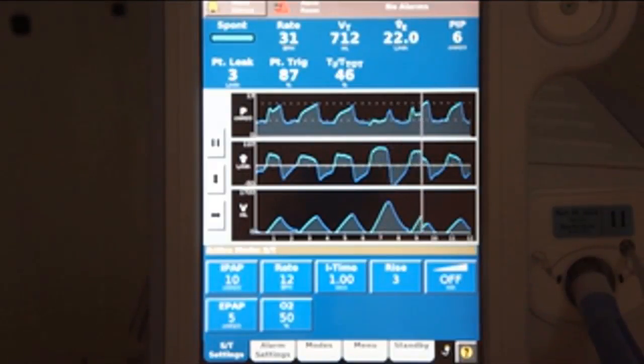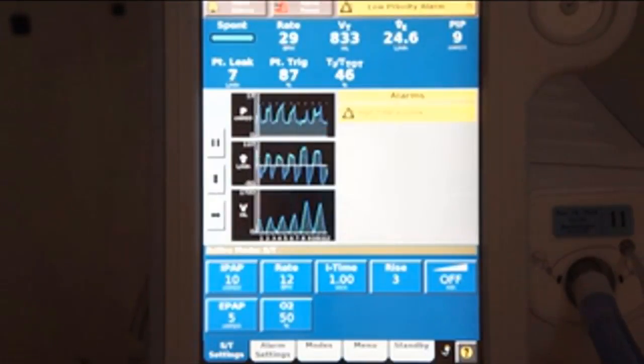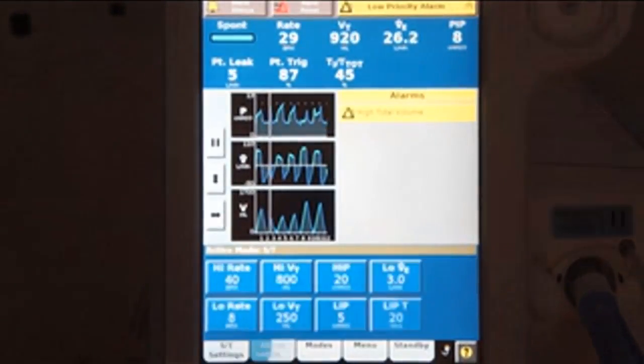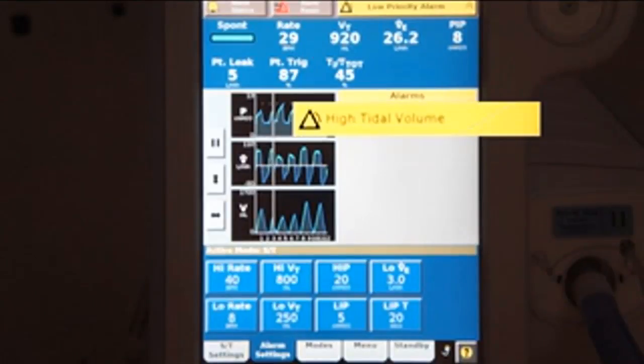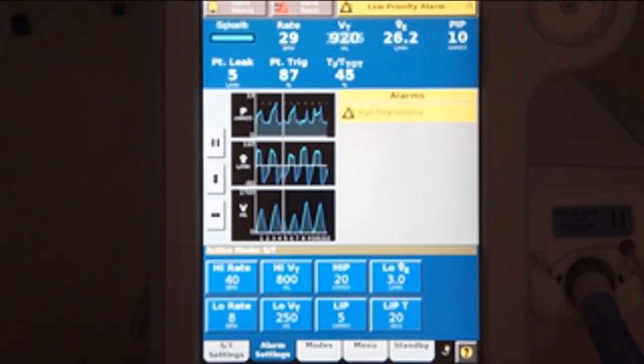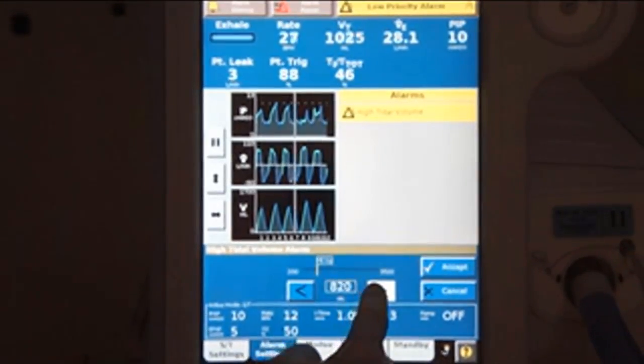Adjust the alarms in accordance with the clinical scenario and ventilator settings. Assess the patient whenever an alarm occurs. In this case, the patient's tidal volume is greater than the high tidal volume alarm threshold. If this tidal volume is acceptable, however, the alarm threshold can be adjusted.